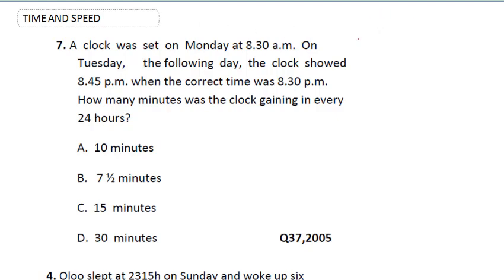This question says: a clock was set on Monday at 8:30 a.m. On Tuesday the following day, the clock showed 5 p.m. when the correct time was 8:30 p.m. How many minutes was the clock gaining? Now, this question is a very technical one and you have to be very careful.